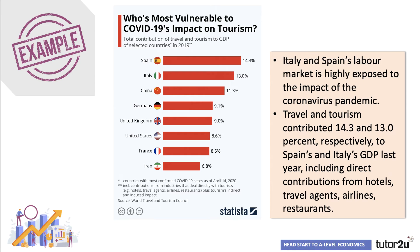This chart shows that Italy and Spain are highly exposed in terms of jobs to the coronavirus pandemic. Travel and tourism contributed over 13% of Spanish and Italian GDP last year, with direct contributions from hotels, travel agents, airlines, restaurants, and of course lots of other industries that depend on tourism for their demand. In the UK, tourism is still pretty big — 9% of GDP.